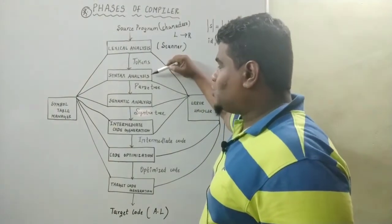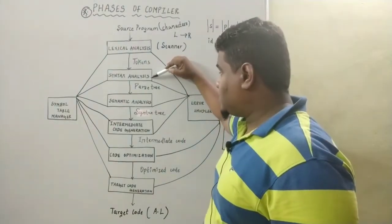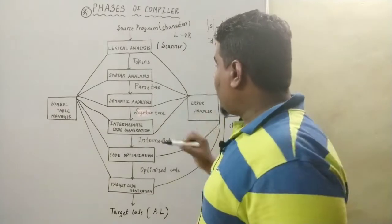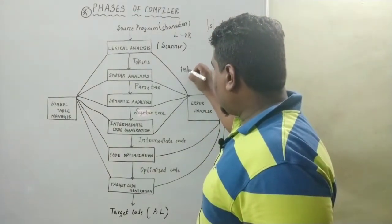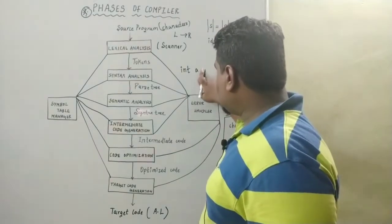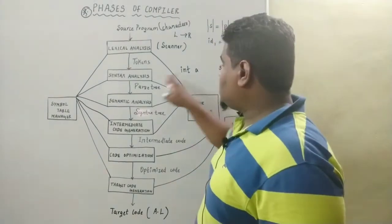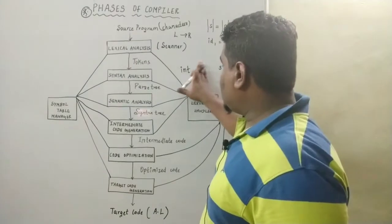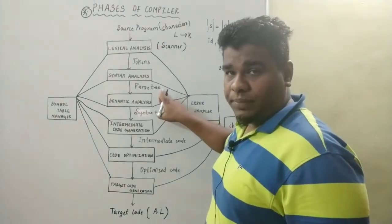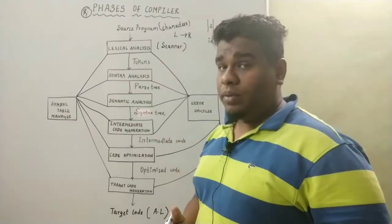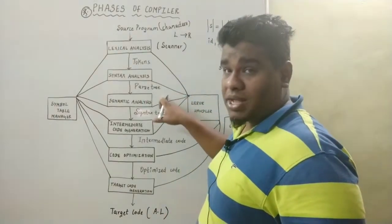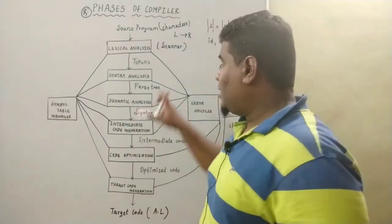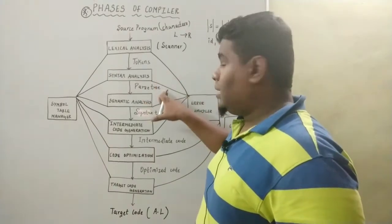The second phase is syntax analysis. Syntax analysis will concentrate on the syntax part. For example, if I declare a variable int a but forget to put the semicolon at the end, the syntax analysis will identify this error — that is the duty of syntax analysis. Whenever there are no errors in the program, syntax analysis will generate the parse tree. But if there are errors in the program coding, then syntax analysis is not going to generate the parse tree.